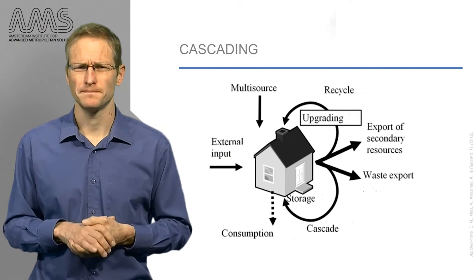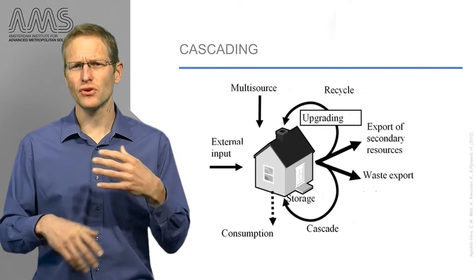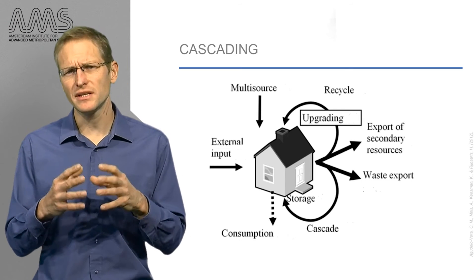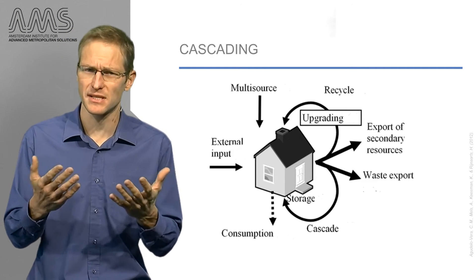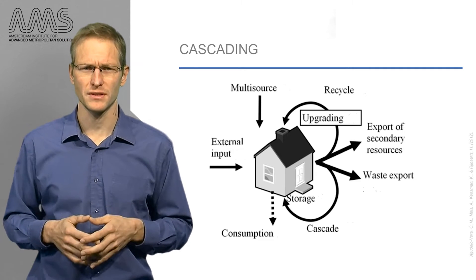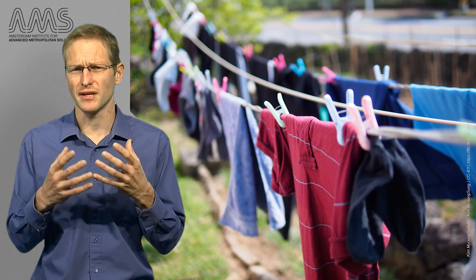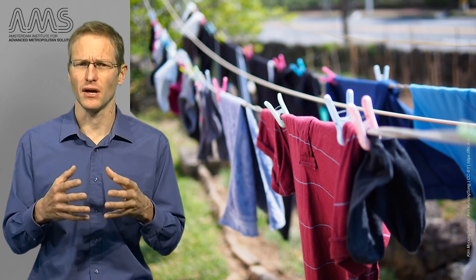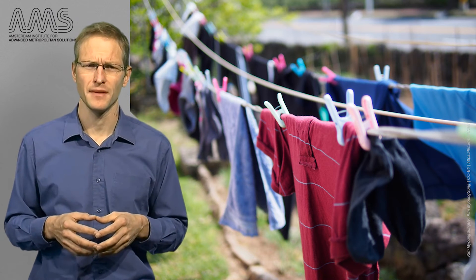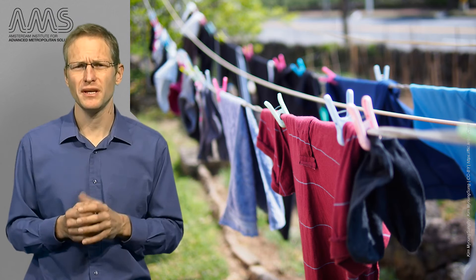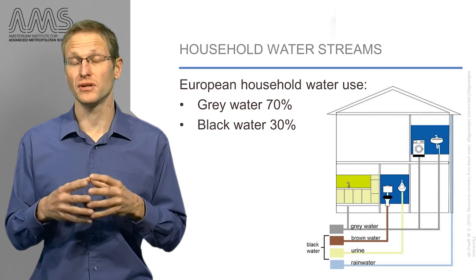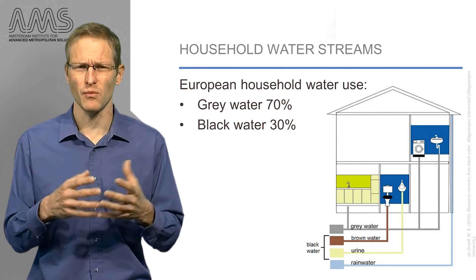But reducing water consumption is not all. Water is an amazing thing — it can be used over and over again. One option is to cascade the water according to its quality, using only the quality that is necessary. One can distinguish between potable water and non-potable, or second quality, water. Toilet flushing and clothes washing can be done with non-potable quality water, while other needs should be covered with drinking water quality. Sources of non-potable water include water from the sink or washing machine — so-called grey water — but also rainwater.